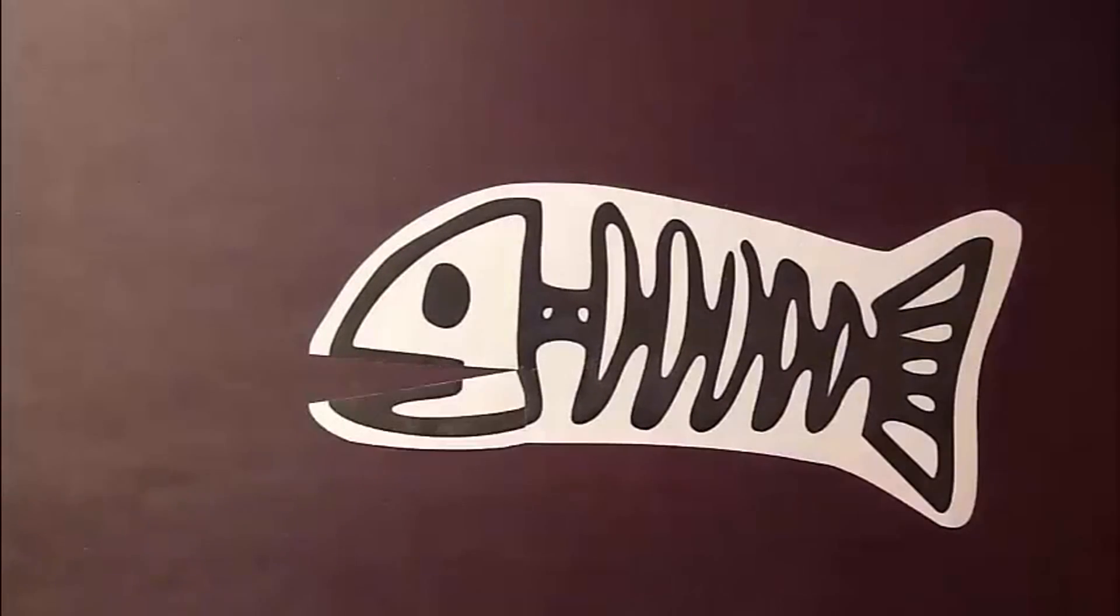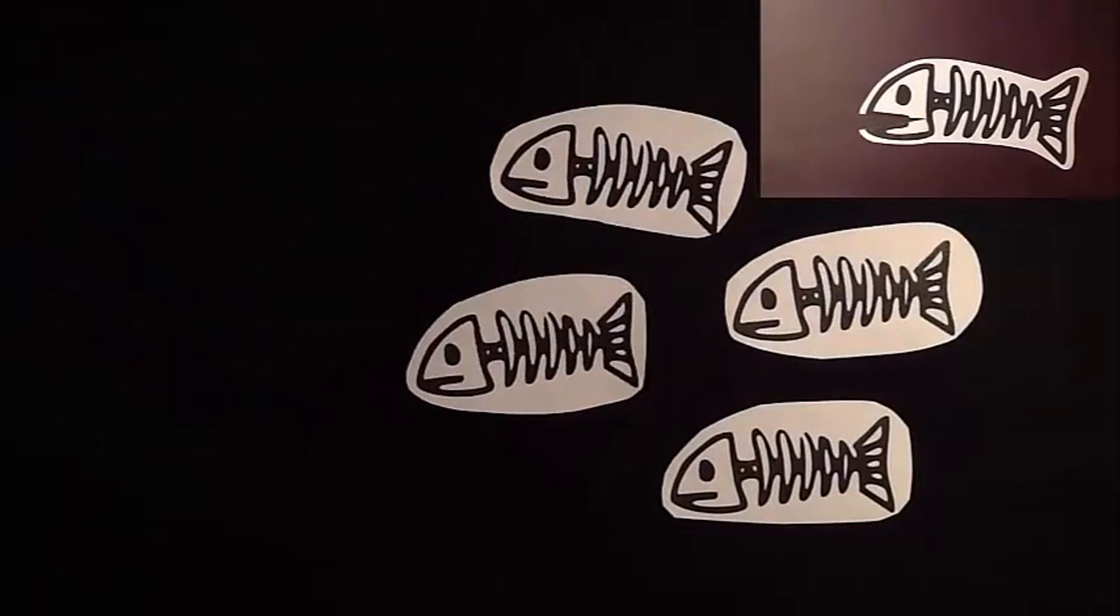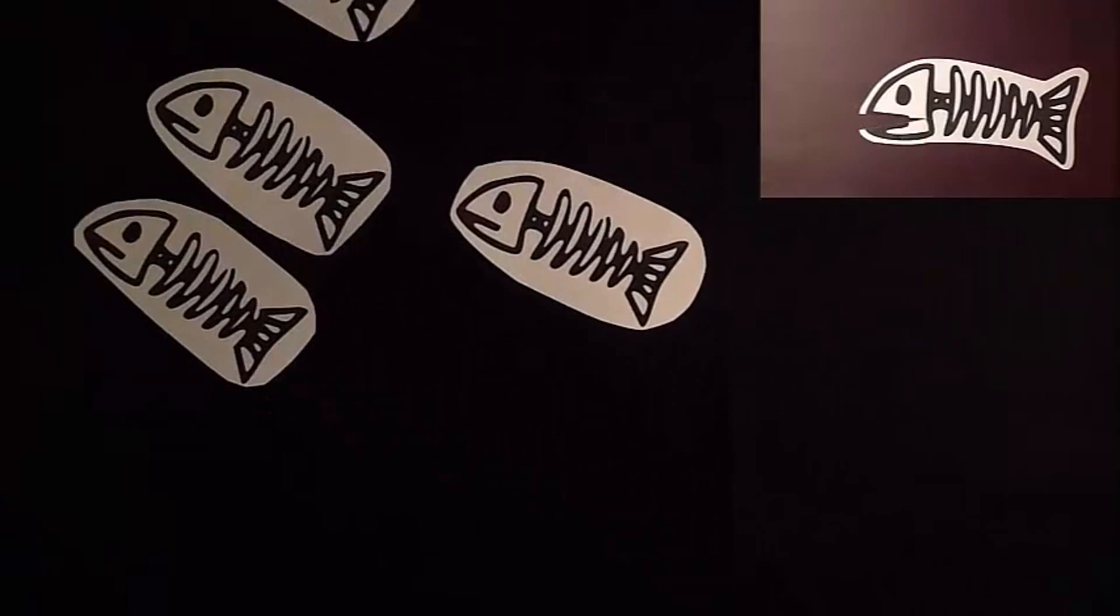Sometimes a paleontologist lucks out, and instead of having only a partial fossil, or a single pretty complete one, she has multiple fossils that give her additional important information. For example, if you had found a whole bunch of fossils that looked like me, all together facing the same direction, you might hypothesize my species was a social fish that swam in schools.